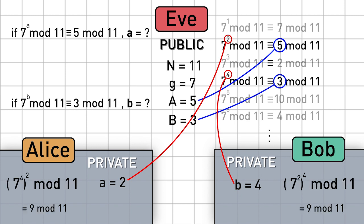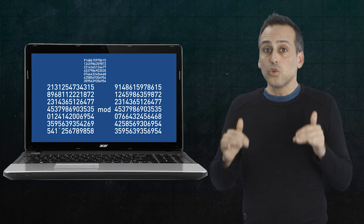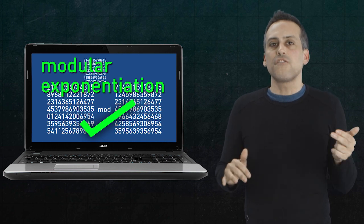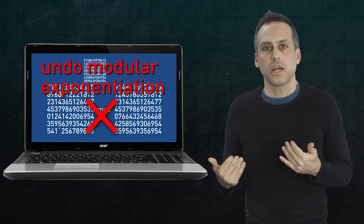namely just raise 7 to a single power. More generally, when the modulus and the exponents are enormous, computers can still do modular exponentiation extremely quickly. But there simply is no fast way to undo modular exponentiation.